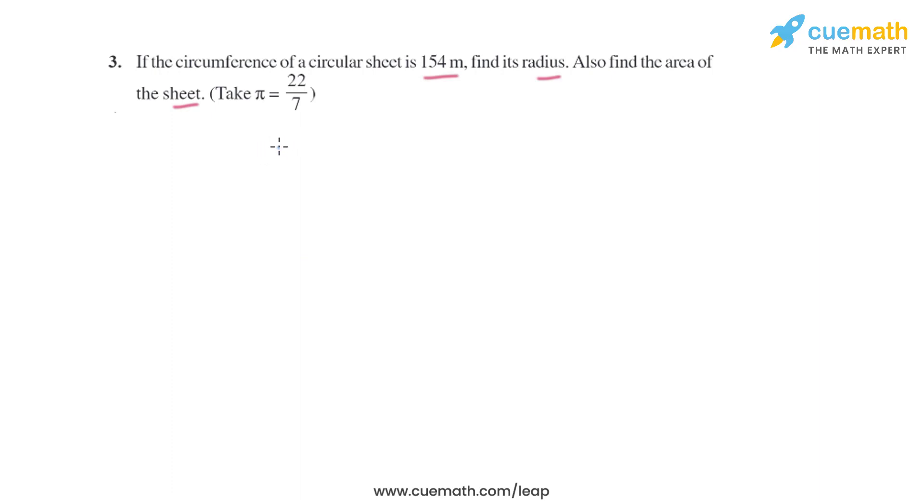So let's start finding the radius. We know the formula to find the circumference is basically 2πr, and the circumference is given in the question, that is 154 meters. That equals to 2 × 22/7 × r.